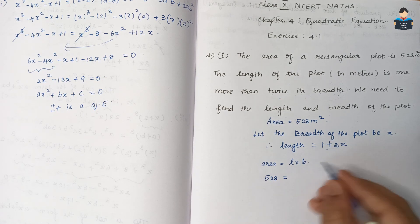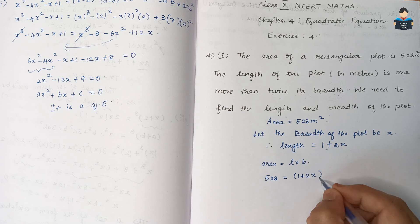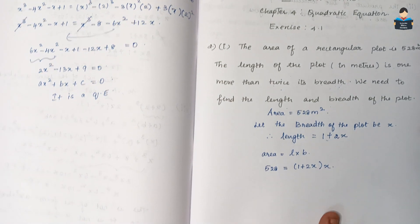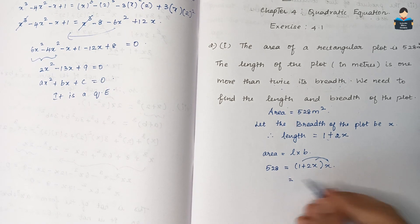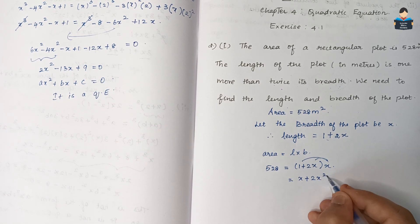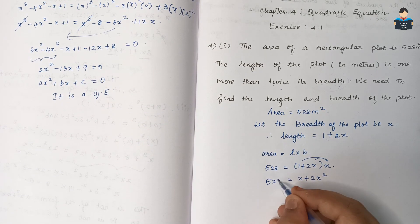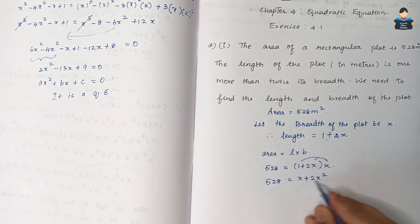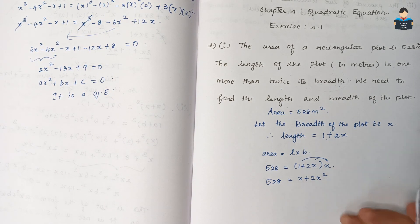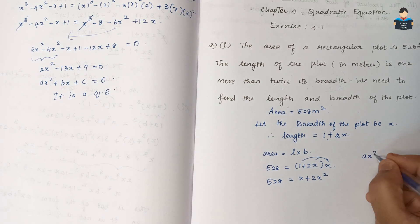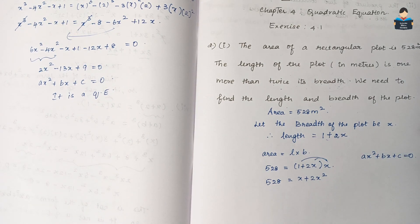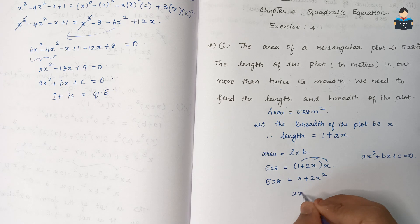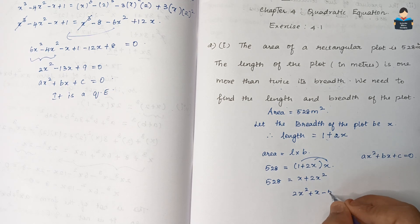528 equals length (1 + 2x) into breadth x. Multiplying, x plus 2x squared equals 528. Rearranging into quadratic equation format: 2x² + x − 528 = 0.